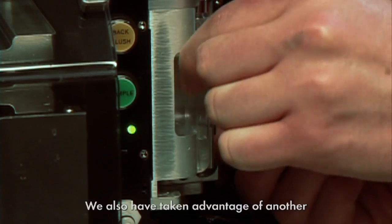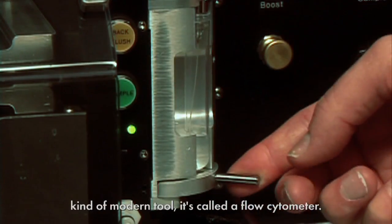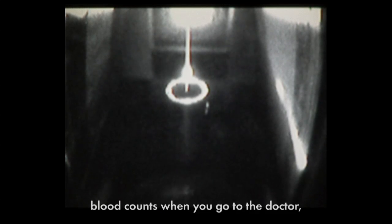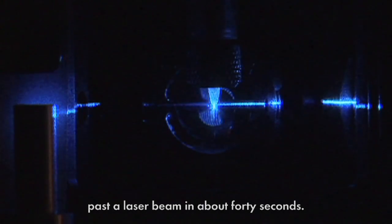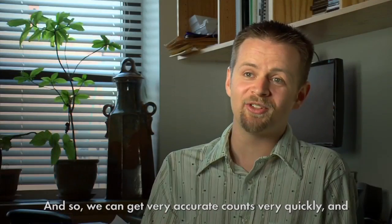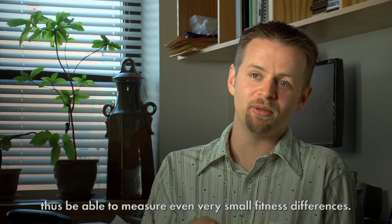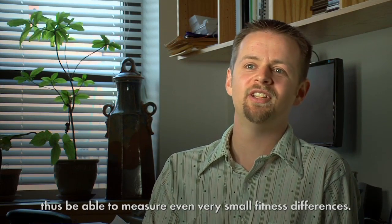We also have taken advantage of another kind of modern tool. It's called a flow cytometer. It's the same kind of thing that would do blood counts when you go to the doctor and it can run about 50,000 of our cells past a laser beam in about 40 seconds. And so we can get very accurate counts very quickly and thus be able to measure even just very small fitness differences.